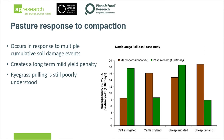Ryegrass pulling seems to be related to compaction. Anecdotally, a lot of farmers struggle with it, but research-wise it remains an enigma — another nut we need to crack. It's certainly a bigger issue at pasture establishment, and it may be worth exploring connections with the soil microbiome.